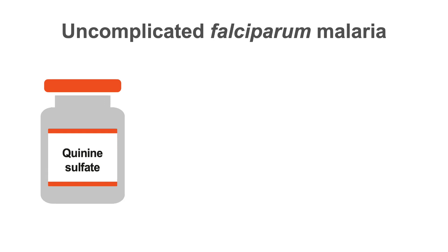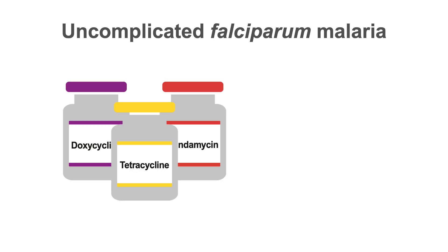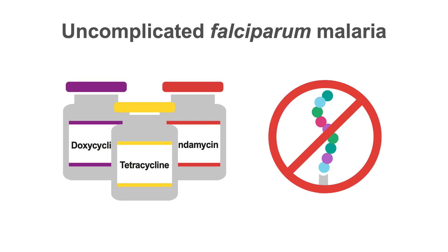Quinine is one of the 8-aminoquinolines, which block heme polymerase. Doxycycline, tetracycline, and clindamycin all inhibit protein synthesis in the parasite. Either of the tetracyclines are preferred to clindamycin because there are more efficacy data available.